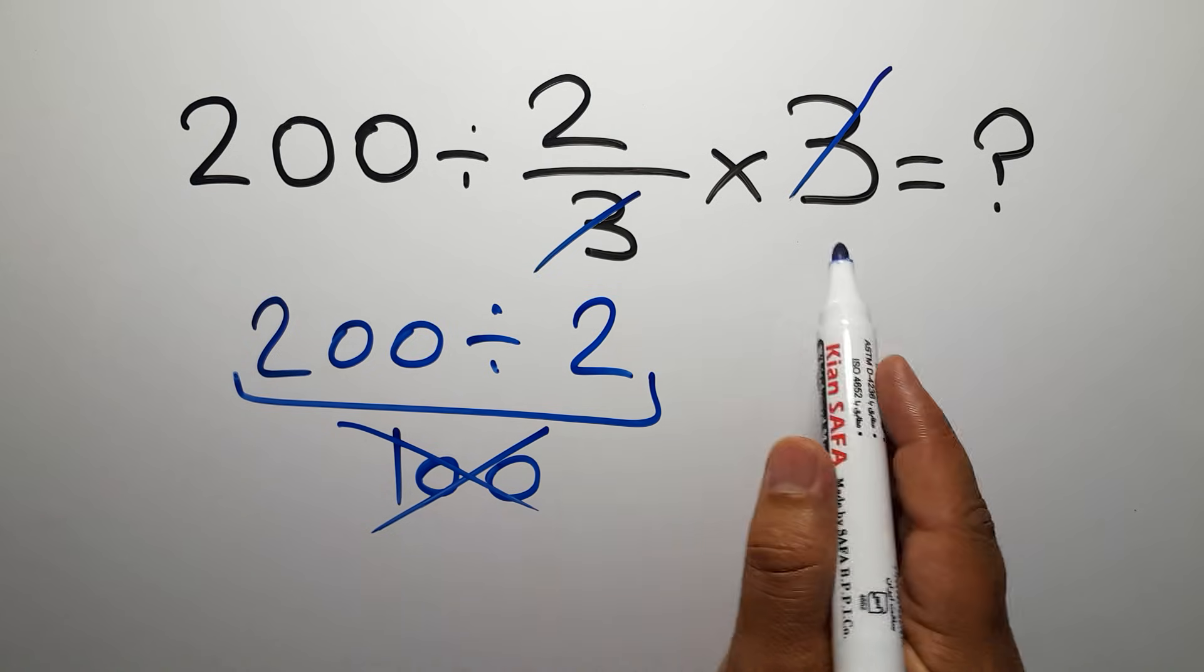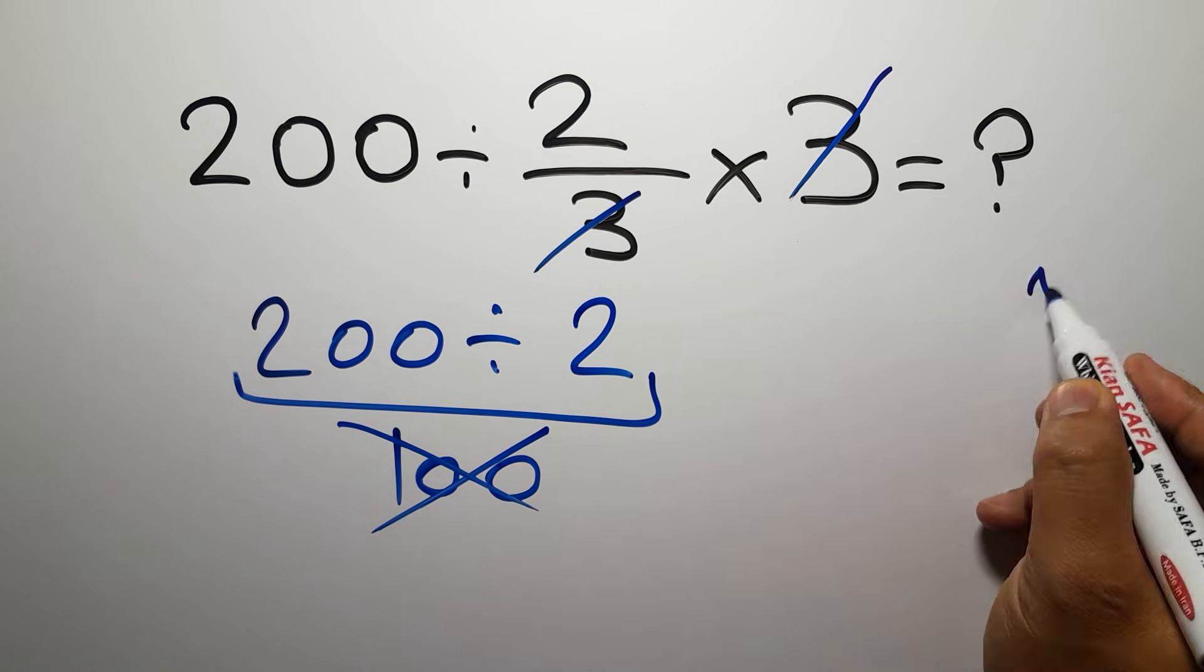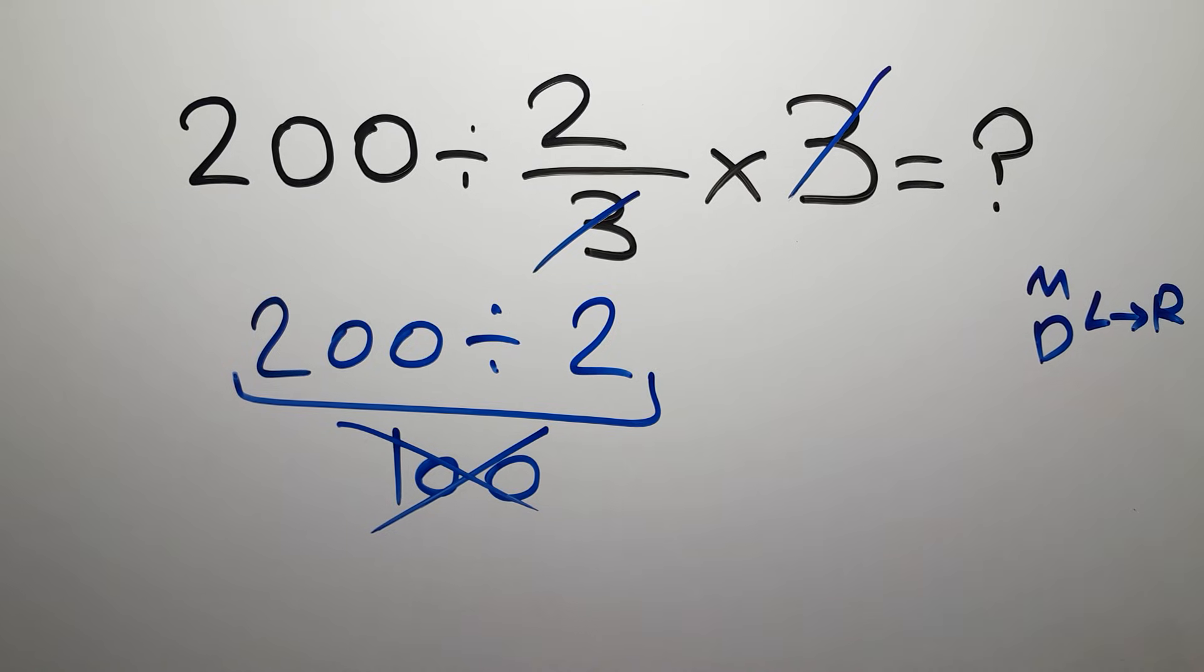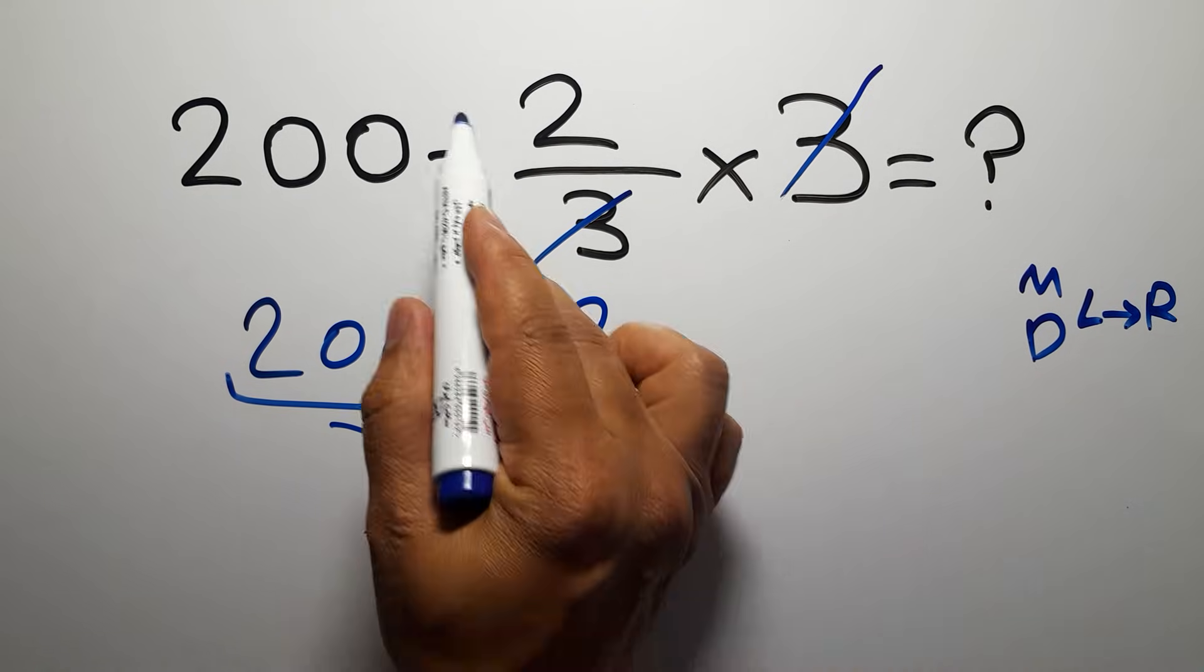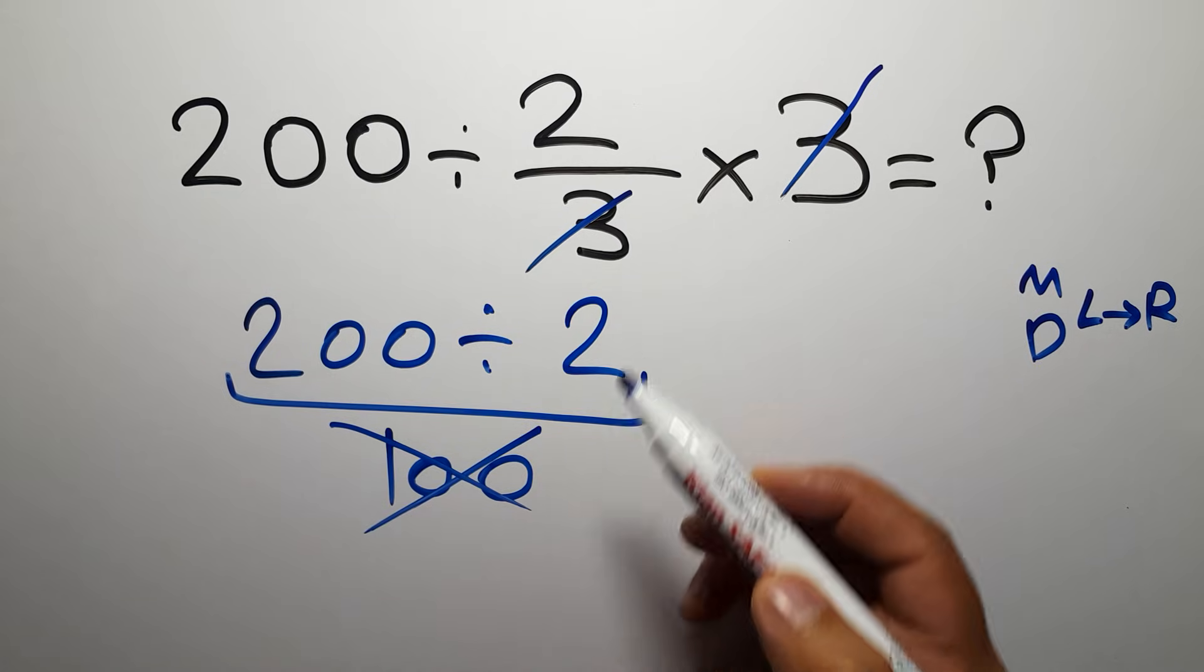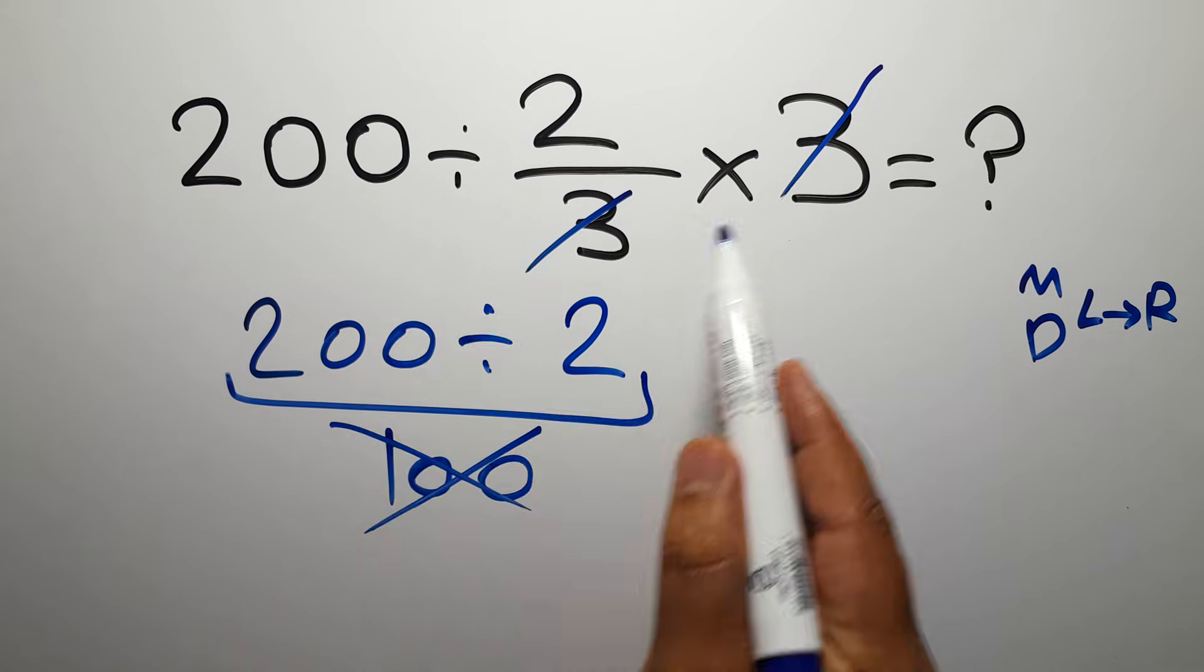according to the order of operations, multiplication and division have equal priority and we have to work from left to right. So here first we have to do this division, not this multiplication. First this division, then this multiplication.